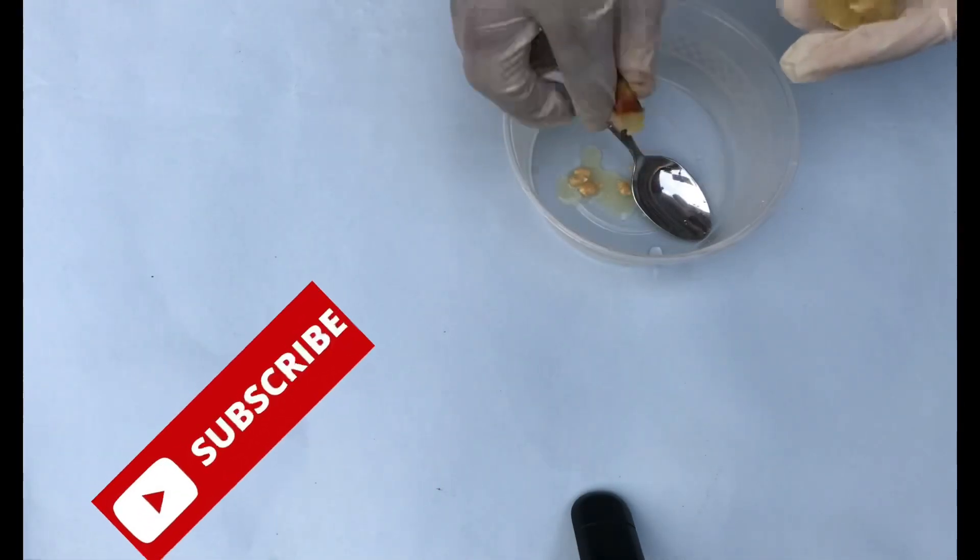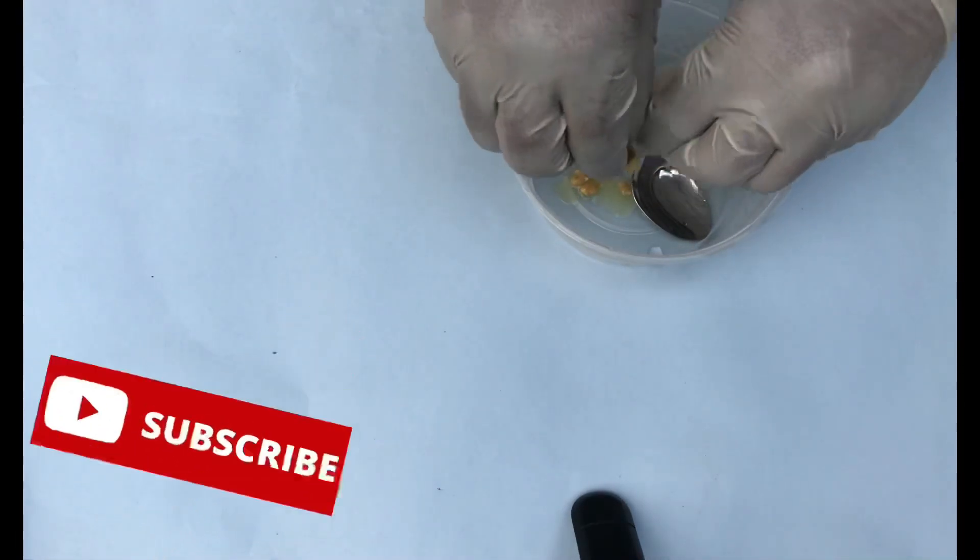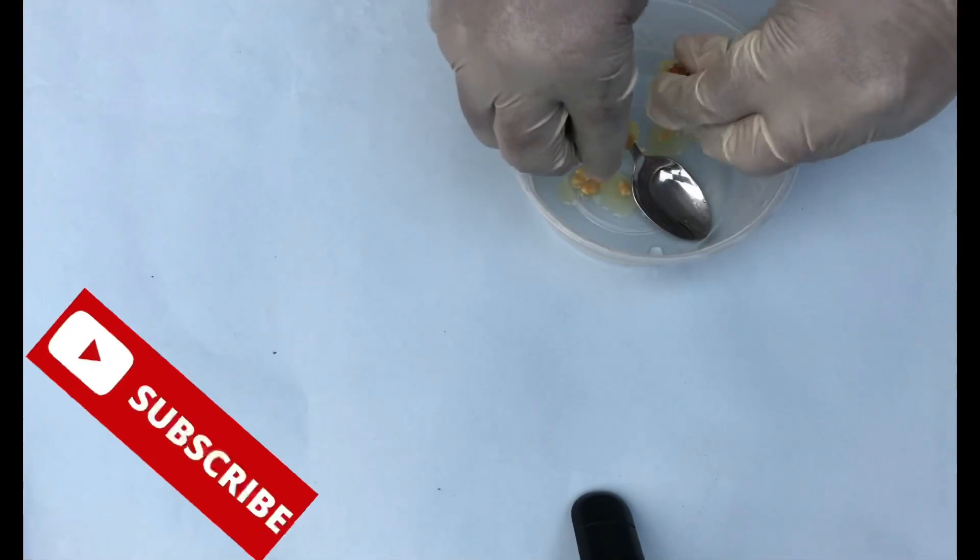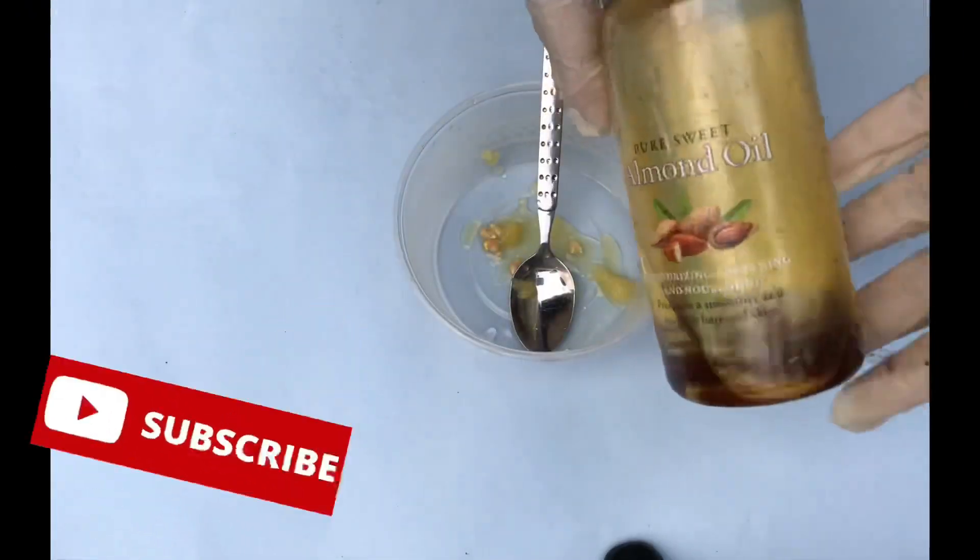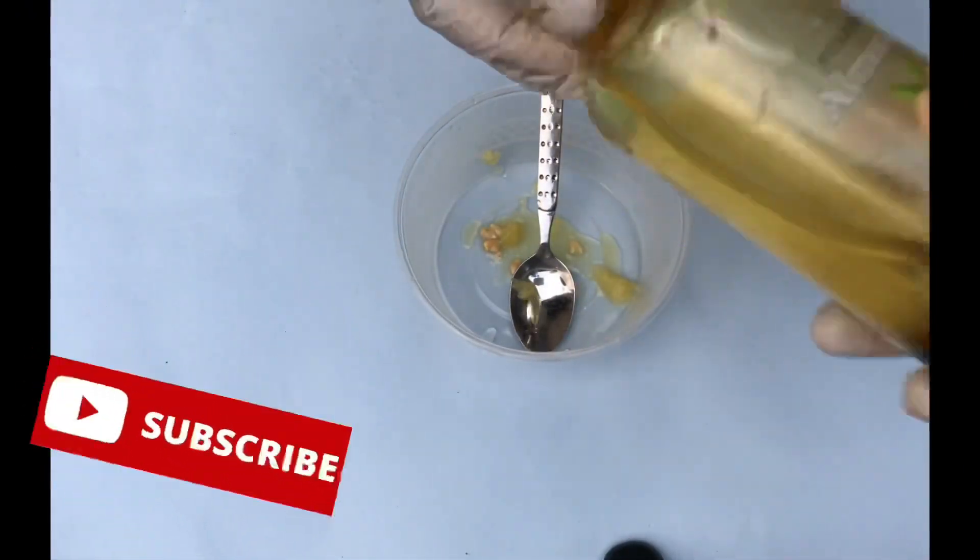I'm pressing out the juice of the lime. I'm going to be mixing this lime juice together with other two ingredients that we're going to use to form a paste for stretch marks.